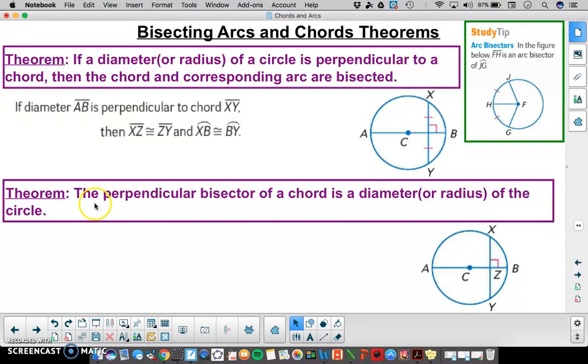This next theorem says the perpendicular bisector of a chord is a diameter. So here, if we know that AB is a perpendicular bisector of chord XY, so we can see right now that it's perpendicular. If we are told that it is a perpendicular bisector, then we would know AB has to be a diameter of circle C. What I want you to do is compare and contrast these two theorems.